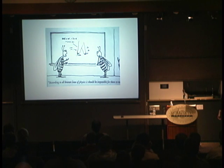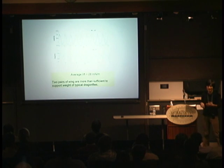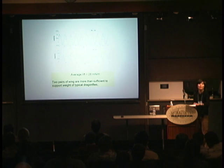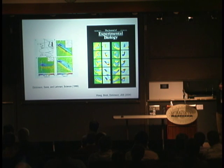Many people jokingly say bumblebees cannot fly according to conventional aerodynamics. But in this system, one can calculate the forces in this two-dimensional simulation and compare them with the insect weight. This is how one starts to model and get a basic picture of the fluid motion as a result of flapping motion.